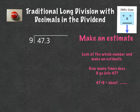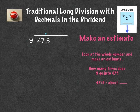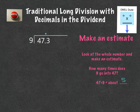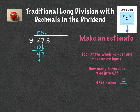Let's try this one. First things first — decimal elevator, take it straight up. Let's do our estimation: how many times will nine go into 47? Nine times five is 45, so it's going to be about five times. Nine goes into four zero times. Zero times nine is zero. Subtract and I get four. Bring down my seven. Nine goes into 47 five times. Five times nine is 45. Subtract and I get two.